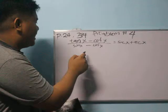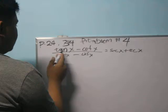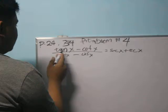So I'm going to prove that tan x minus cot x all over sin x minus cos x is equal to sec x plus csc x. So by definition...